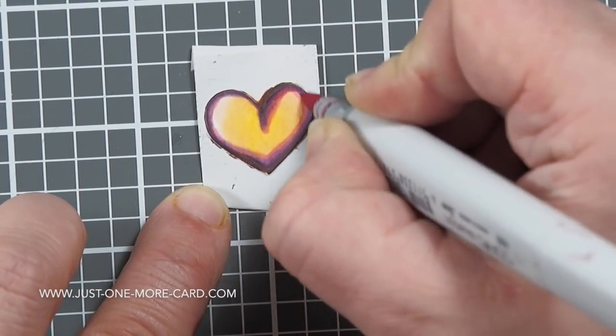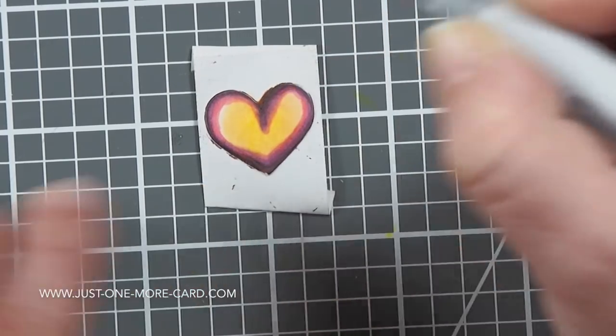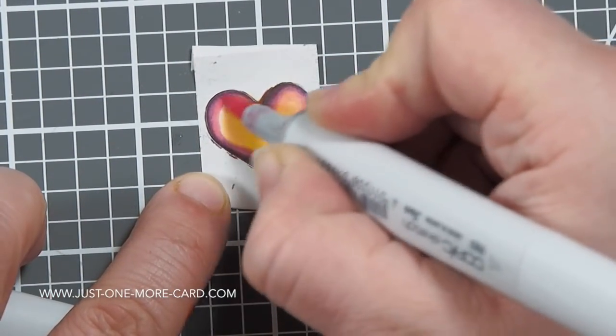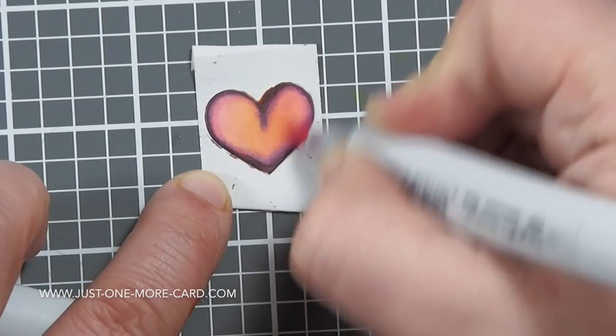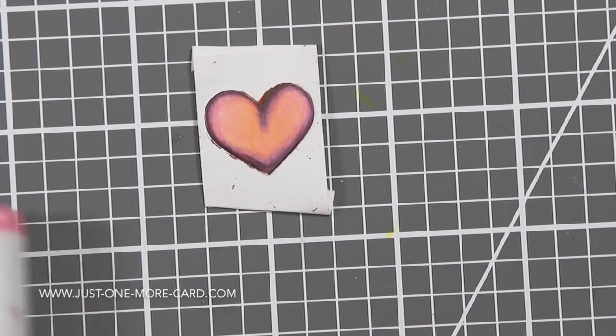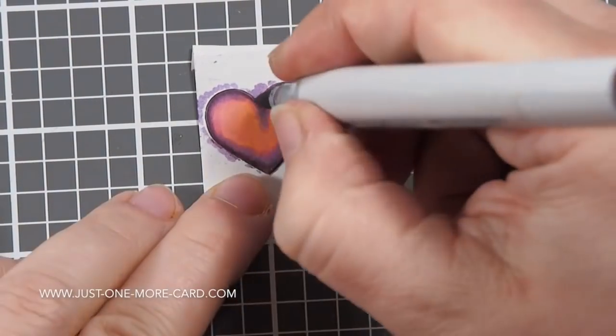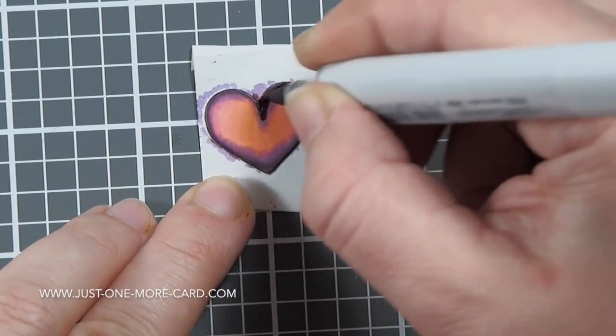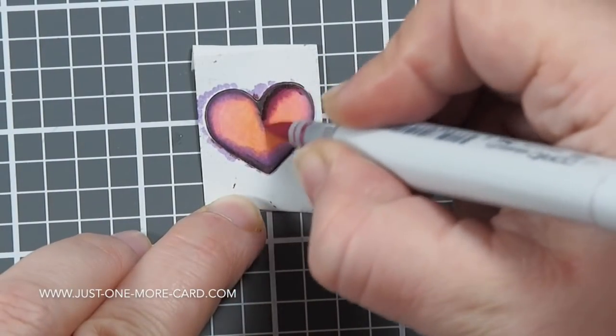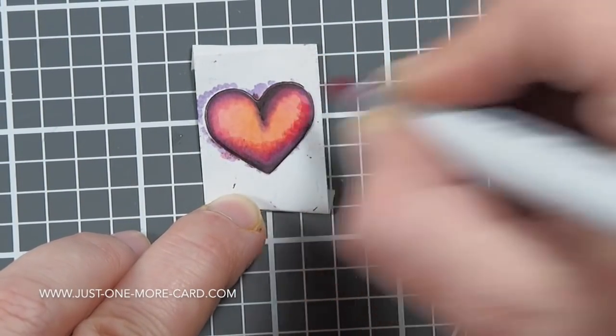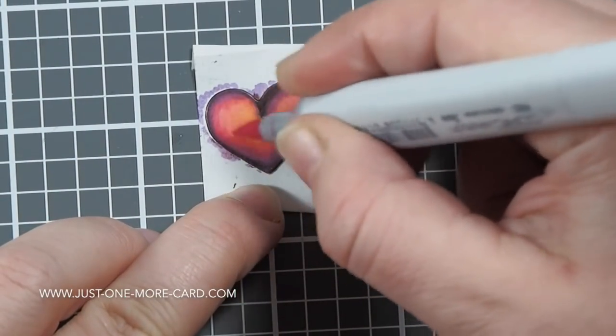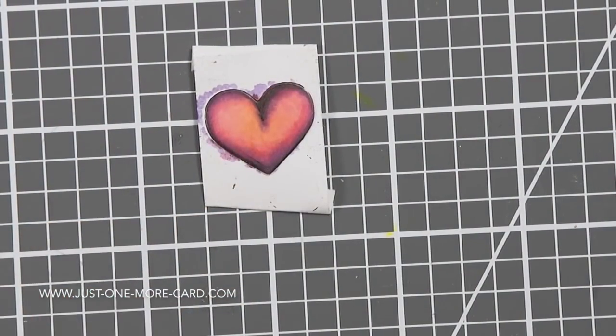I started out with a yellow and an orange color, so the heart will have some warm tones because purple is a cold color and I wanted this heart to have a little bit of a warm subtle undertone. That's why I started out with the orange and yellow, and then you can just use your purples and your pinks to darken up the heart as much as you like.